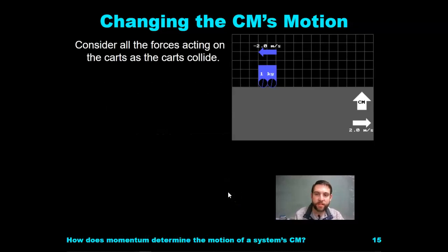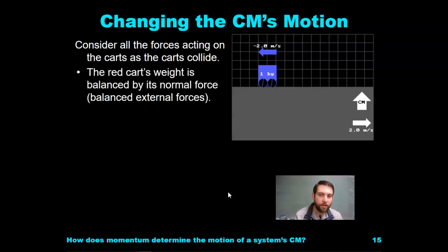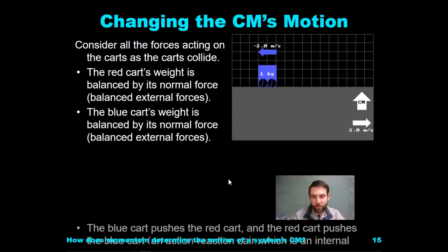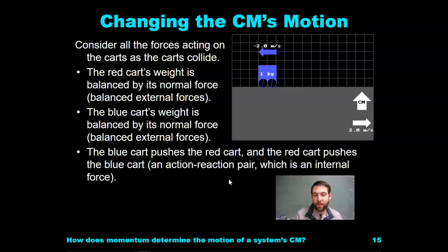If we think about the forces acting on the carts as the carts collide, we have the red cart's weight balanced by the normal force. The blue cart's weight is balanced by the normal force. The blue cart pushes the red cart and the red cart pushes the blue cart. Action-reaction pair. Blue pushes red, so red pushes blue equal and opposite. So that's an internal force.